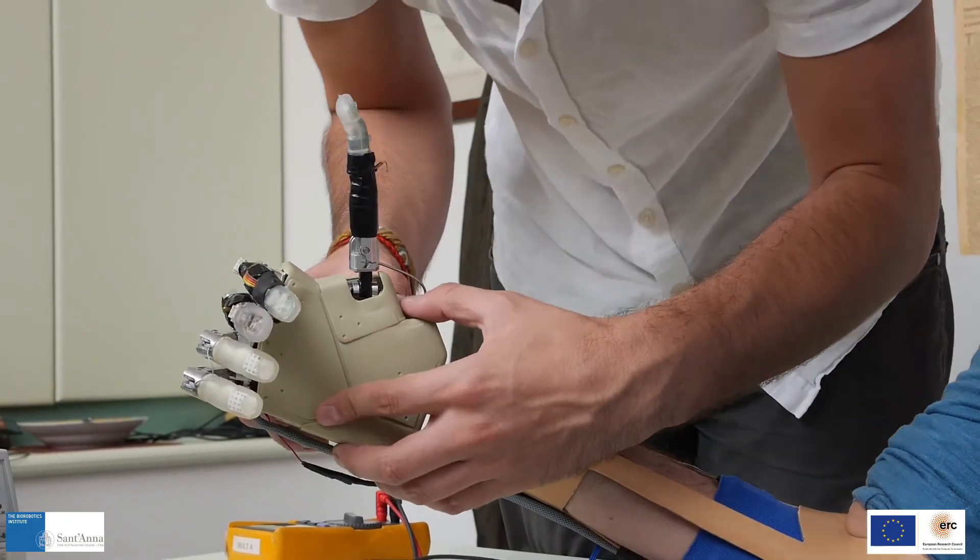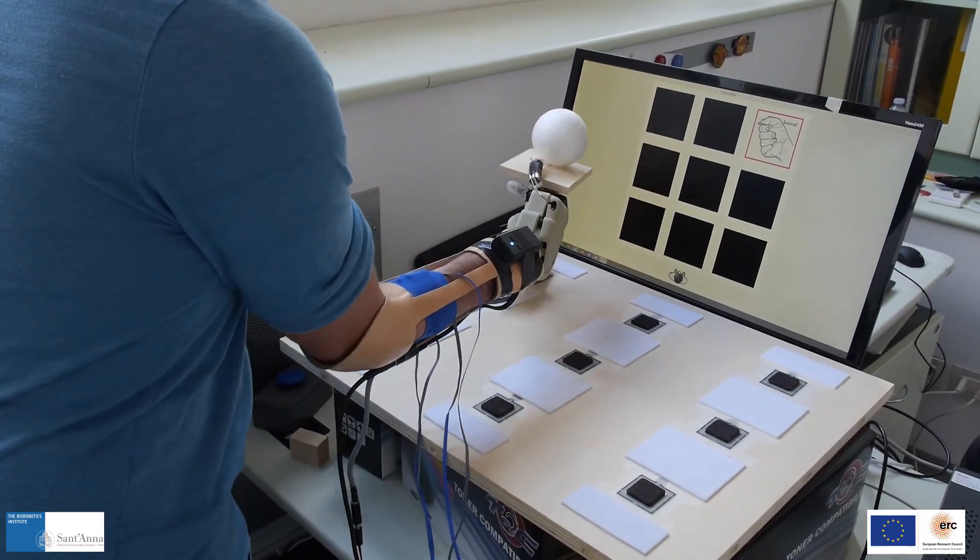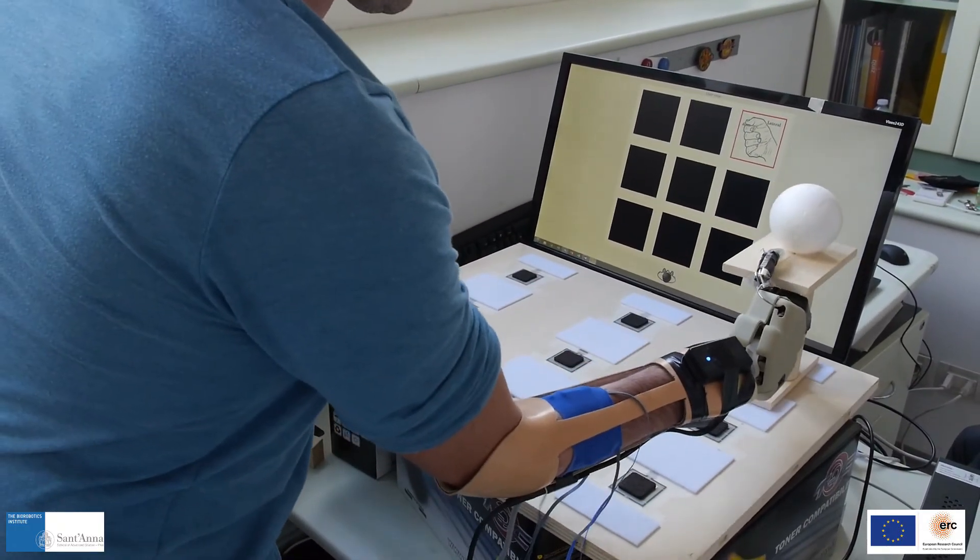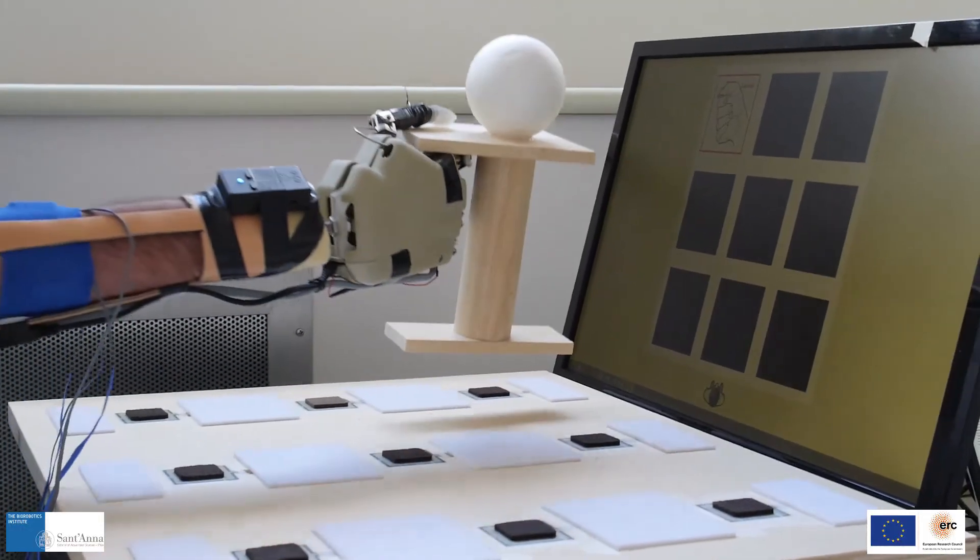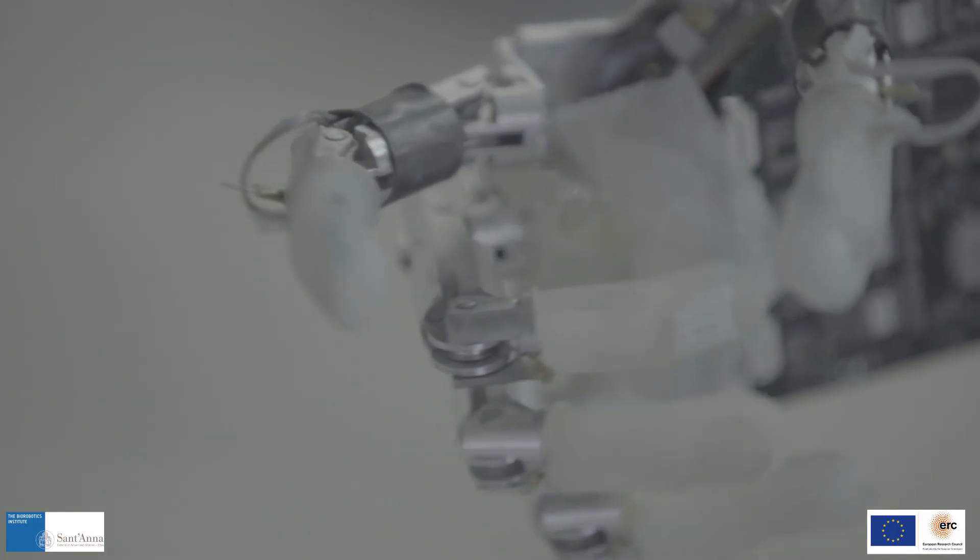The system will be assessed in Italy for one month on one selected amputee. If successful, this approach will have an impact not only on transradial amputees, but on all amputees, because it can be extended to all kinds of upper and lower limb amputations.